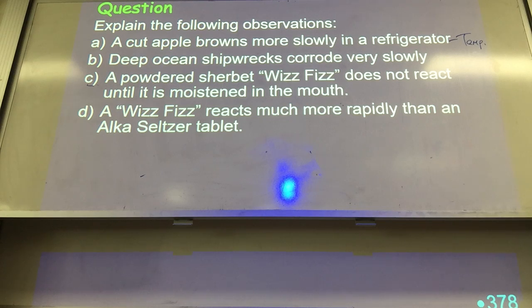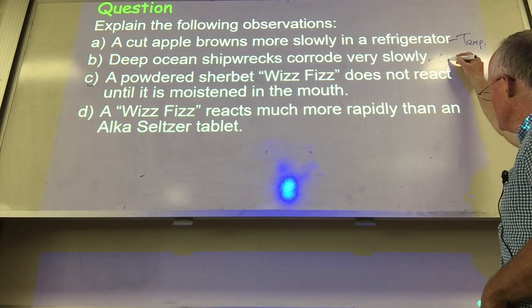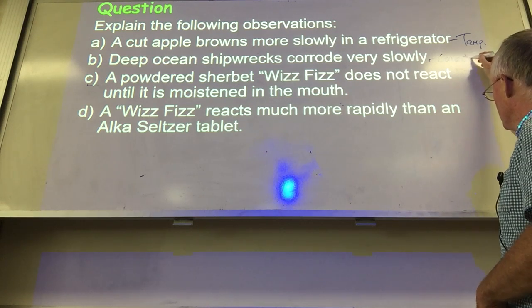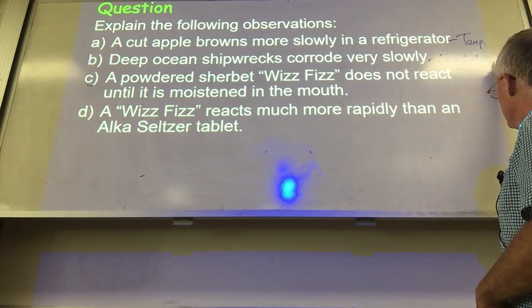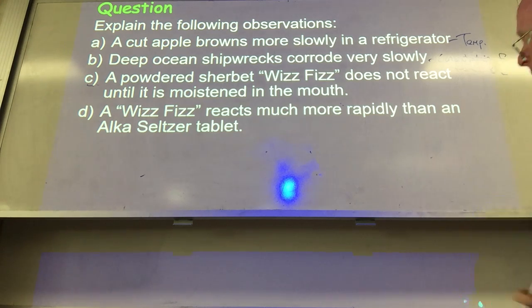For B, what happens deep in the ocean that slows down the rate of reaction? Well, it could be temperature to some effect, but the temperature deep in the ocean is not actually a huge amount lower than it is up high. What it actually is, is the concentration of oxygen that has the effect there.